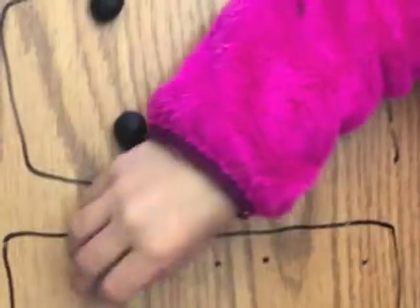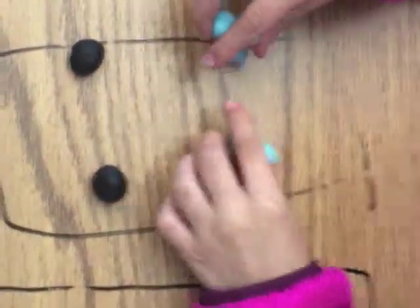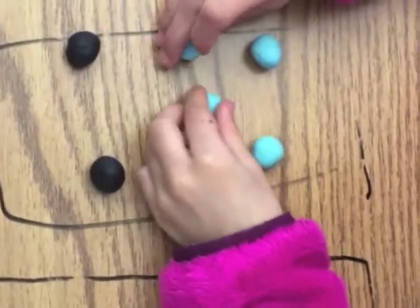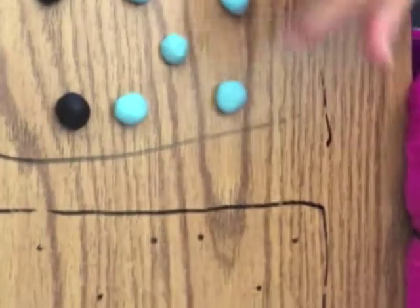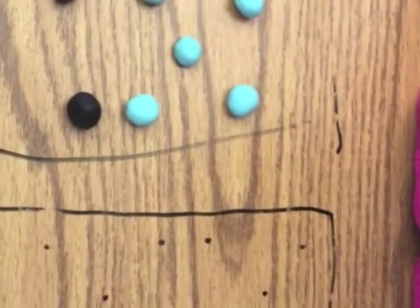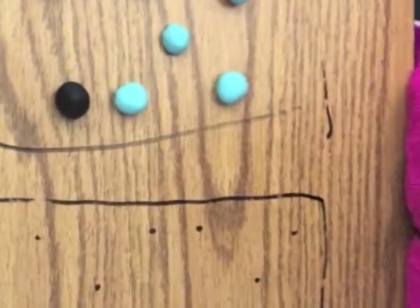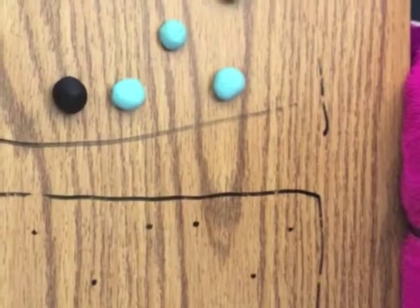Go ahead and move these five right down here. Beautiful. So what's twelve minus five? Seven. Say the whole sentence. Twelve minus five equals seven. Beautiful.